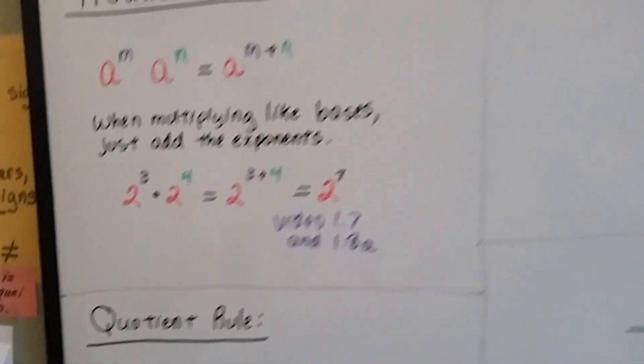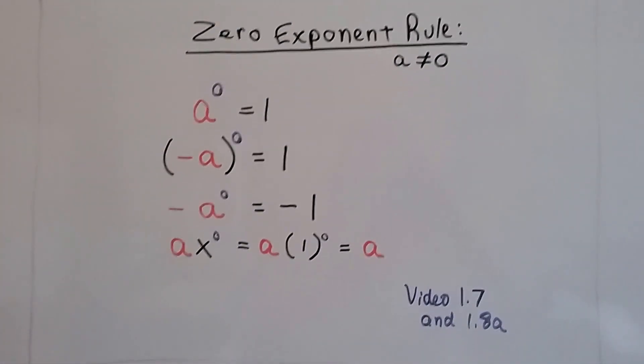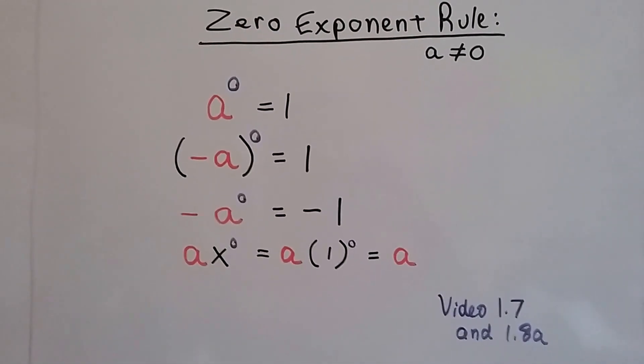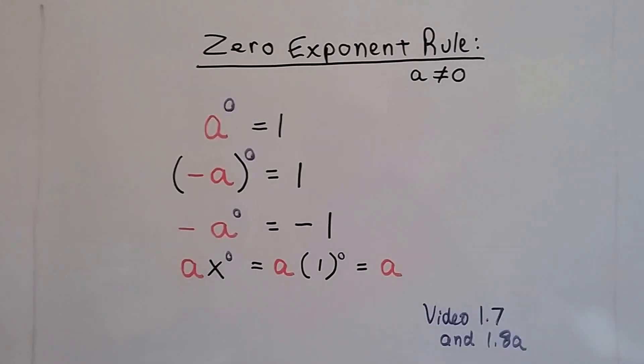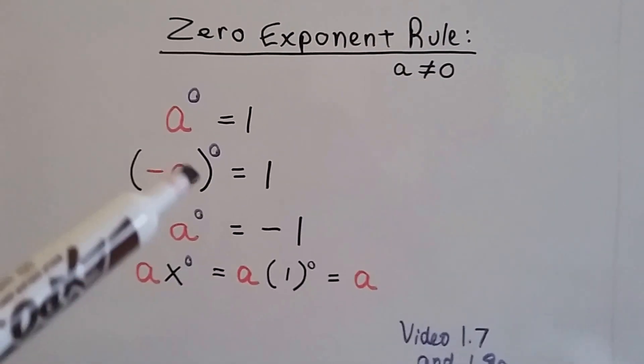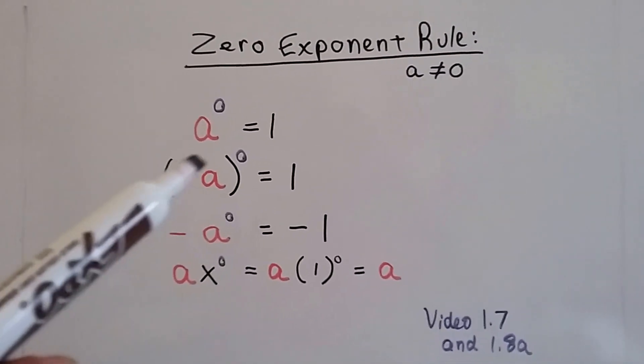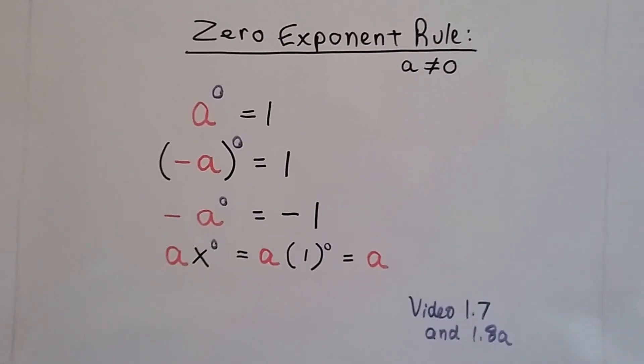The zero exponent rule, this one gets really confusing for some people. It's in video 1.7 and 1.8a. You can just check this description. When a is to the zero power, it equals 1. You have to remember that whatever is inside of these parentheses is the base for that exponent on the outside. So this also equals 1.